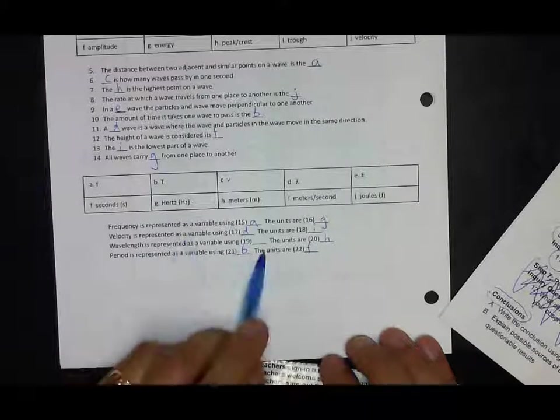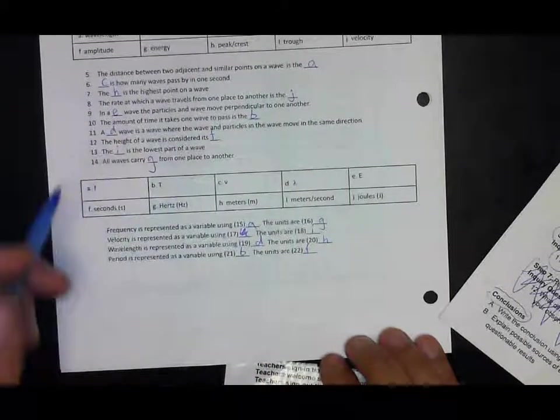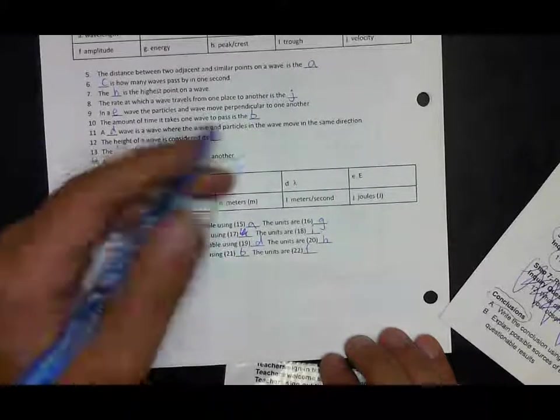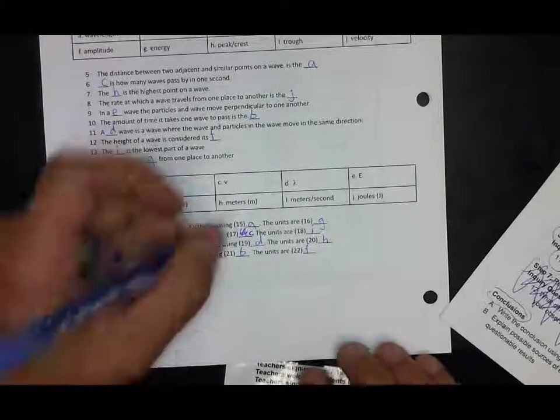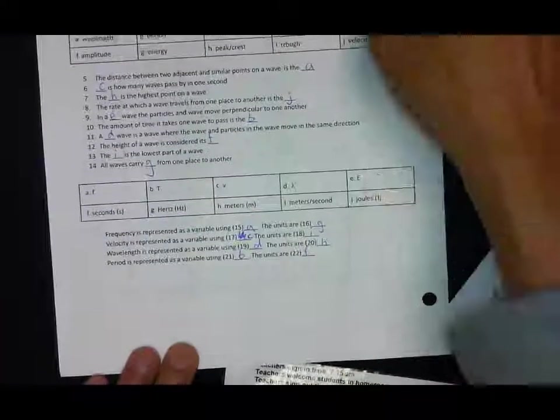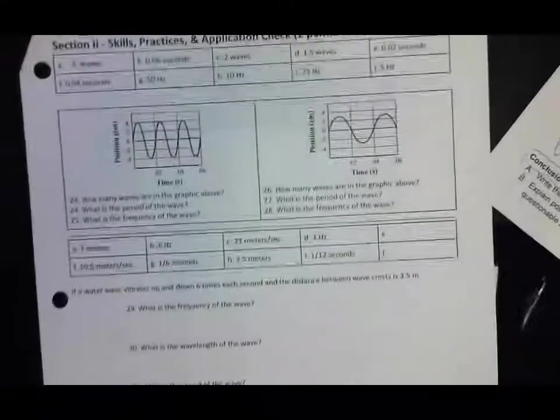And wavelength, I forgot to put that here, but that's D. Oh, this is wrong - velocity is V, that's yes, C there, okay. Alright, let's see if I can zoom in a little bit better for these questions.